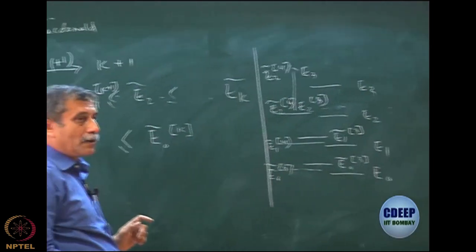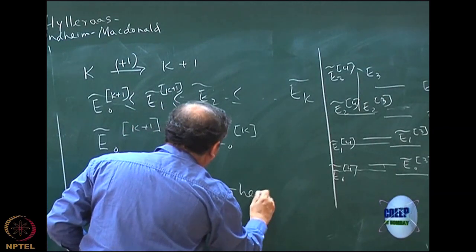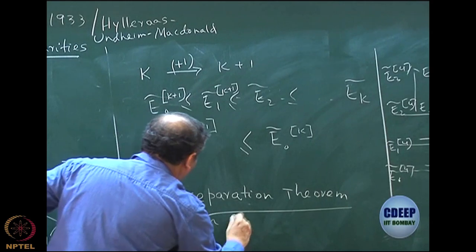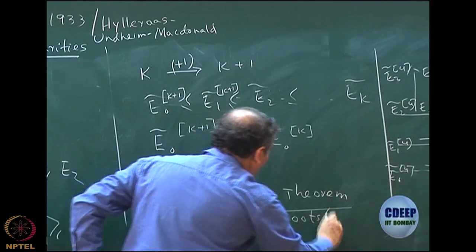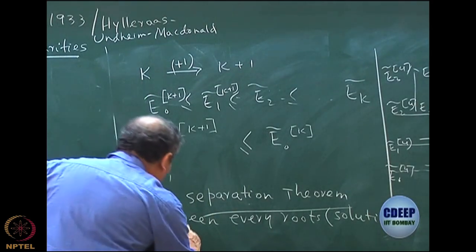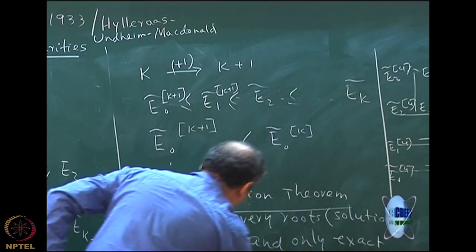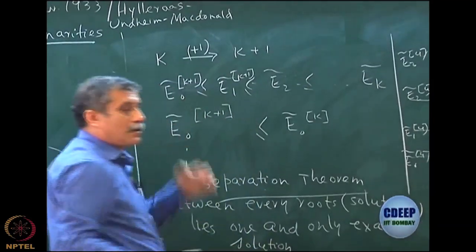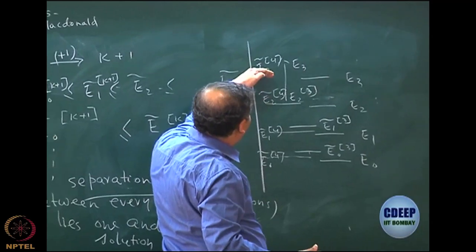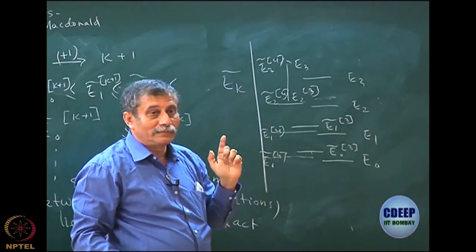This is called the separation theorem. It says that between every two roots — roots meaning solutions — of the variational problem, there lies one and only one exact solution. This statement is beautiful. It means that when I do the four-dimensional calculation, E_2 tilde 4 cannot be above E_3 because between these two roots, there must lie one exact solution.